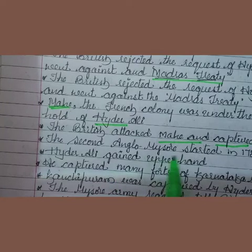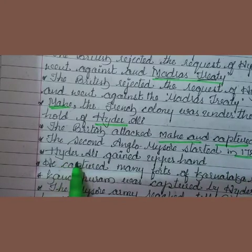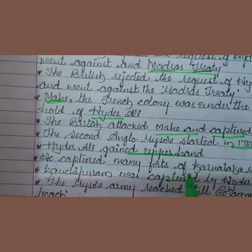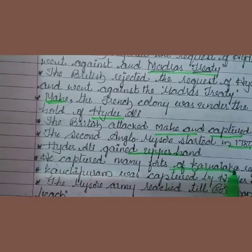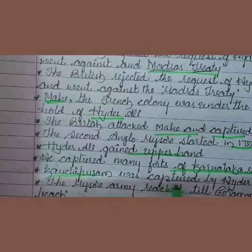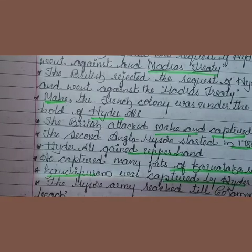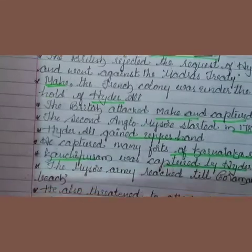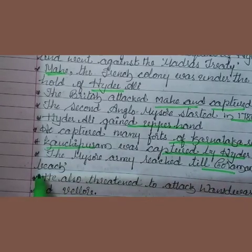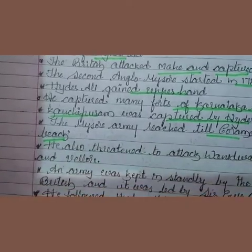The second Anglo-Mysore war started in the year 1780. Initially, Hyder Ali gained the upper hand. He captured many ports of the Karnataka region. Kanchipuram was captured by Hyder Ali, and the Mysore army reached all the way to the Coromandel coast. He also threatened attacks on Vandivash and Vellore.